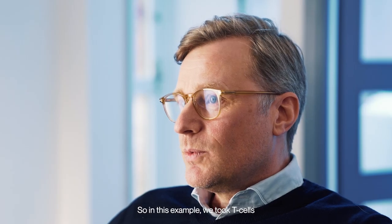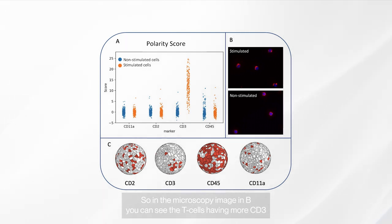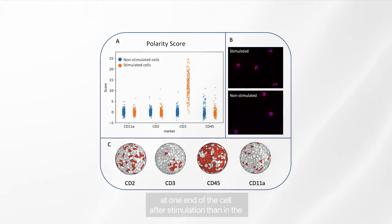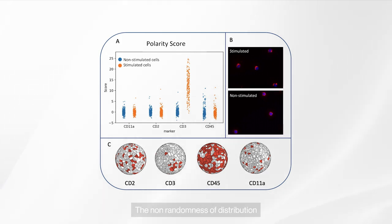In this example, we took T cells and stimulated them via CD3, which is well known to generate a polarized T cell. In the microscopy image, you can see the T cells having more CD3 at one end of the cell after stimulation than in the non-stimulated cell. Looking at the polarity score, you can see that CD3 has a very high polarity score — the non-randomness of distribution — on the stimulated cells but not on the unstimulated cells, while other protein scores are virtually unchanged.